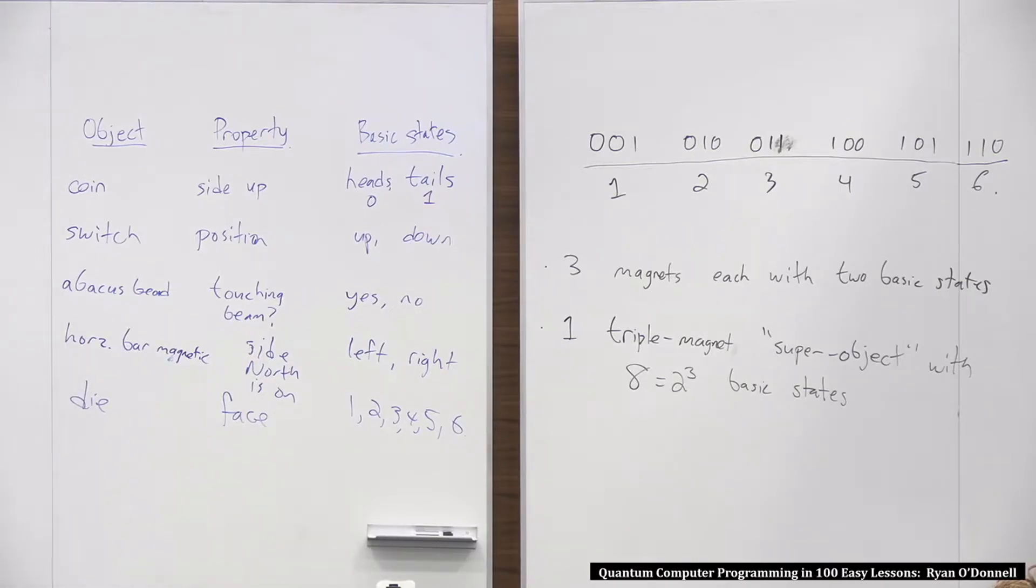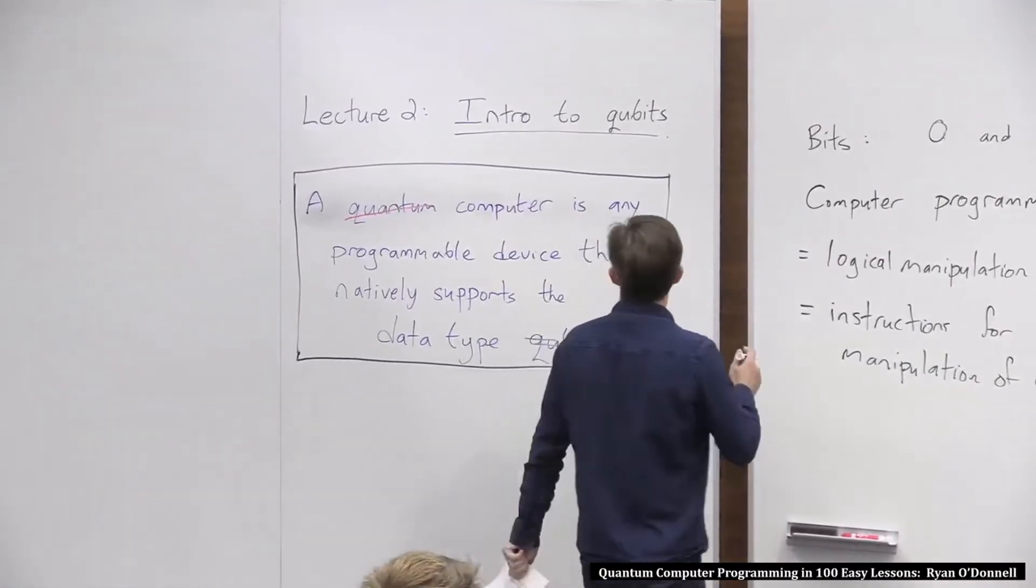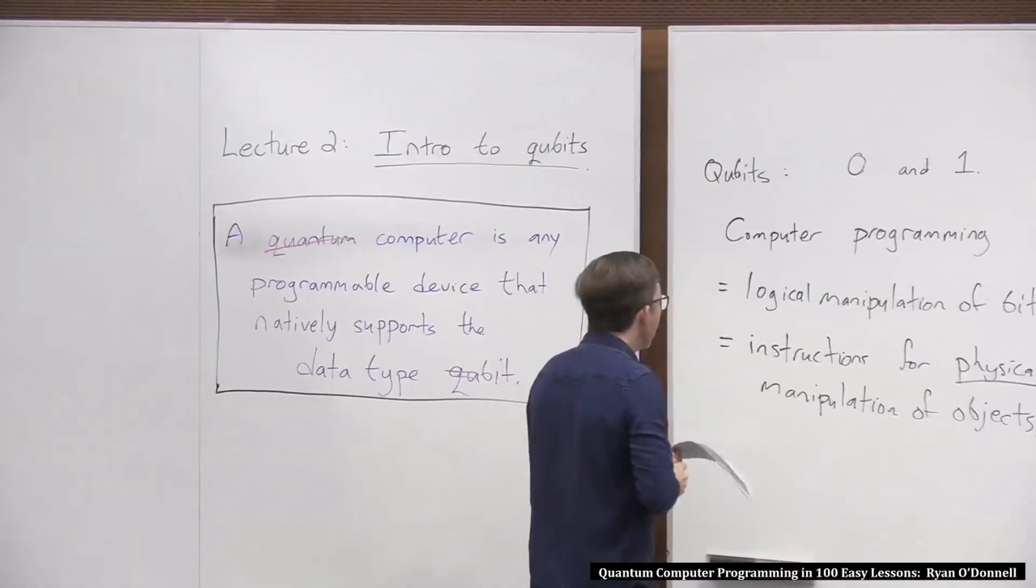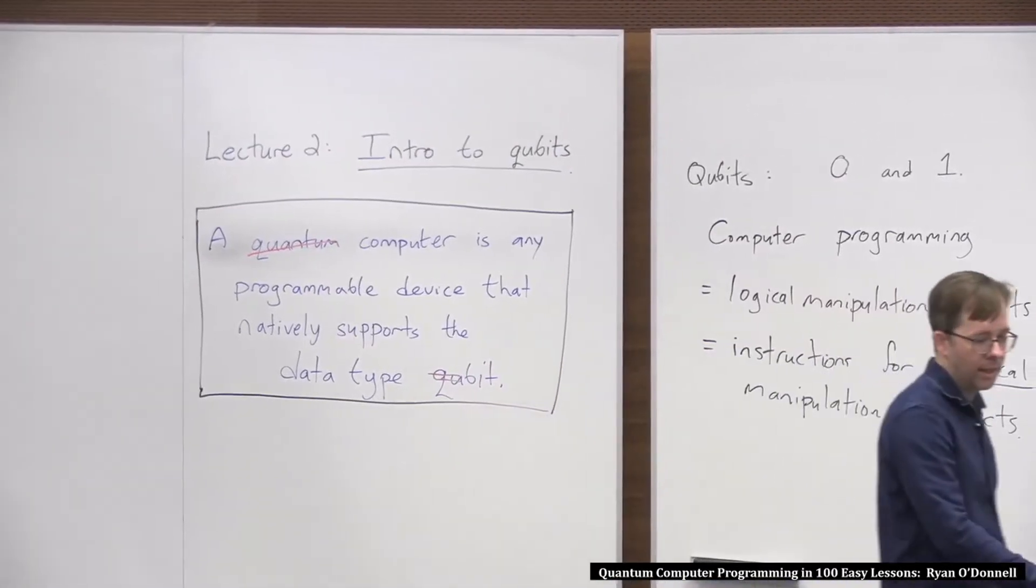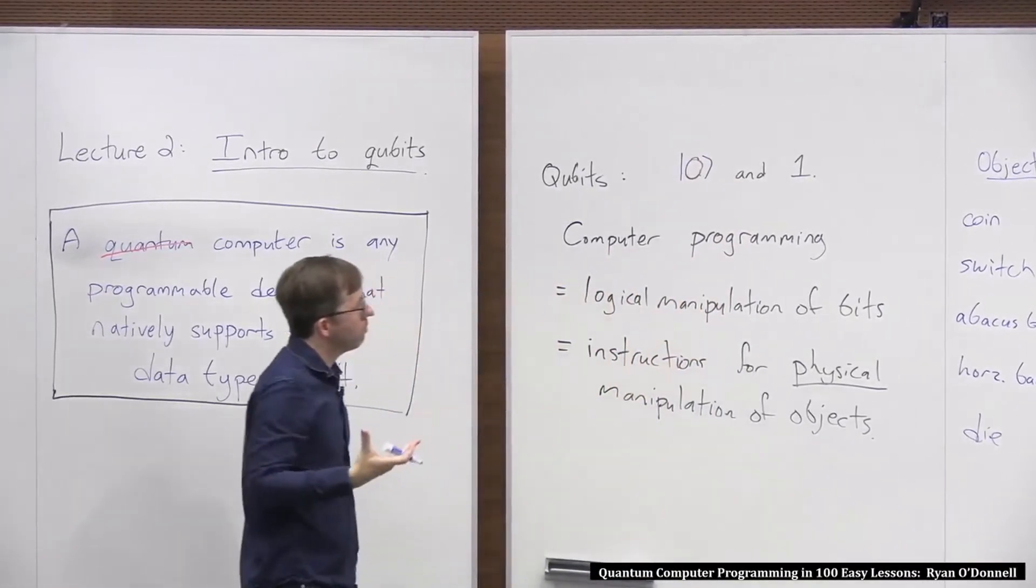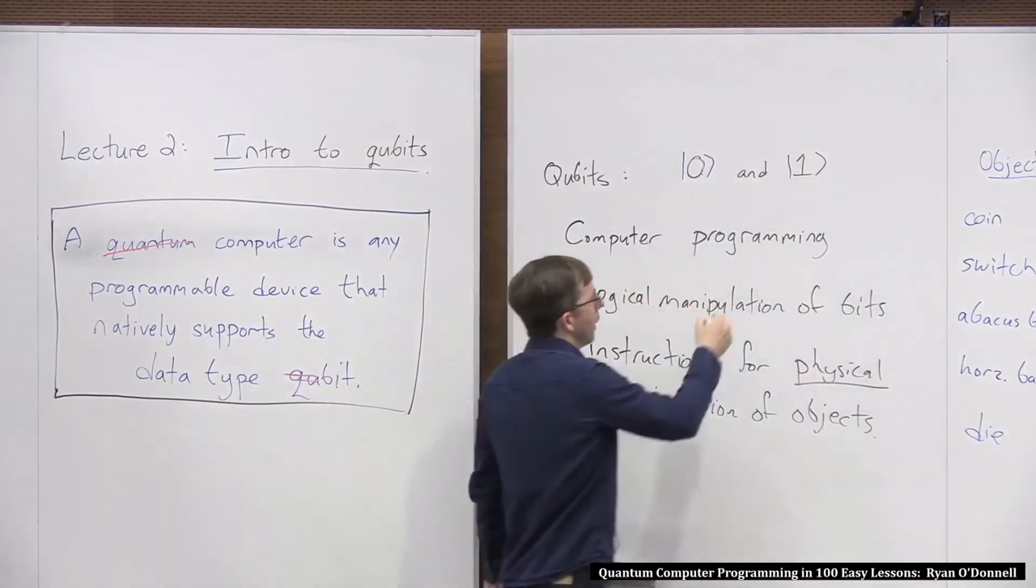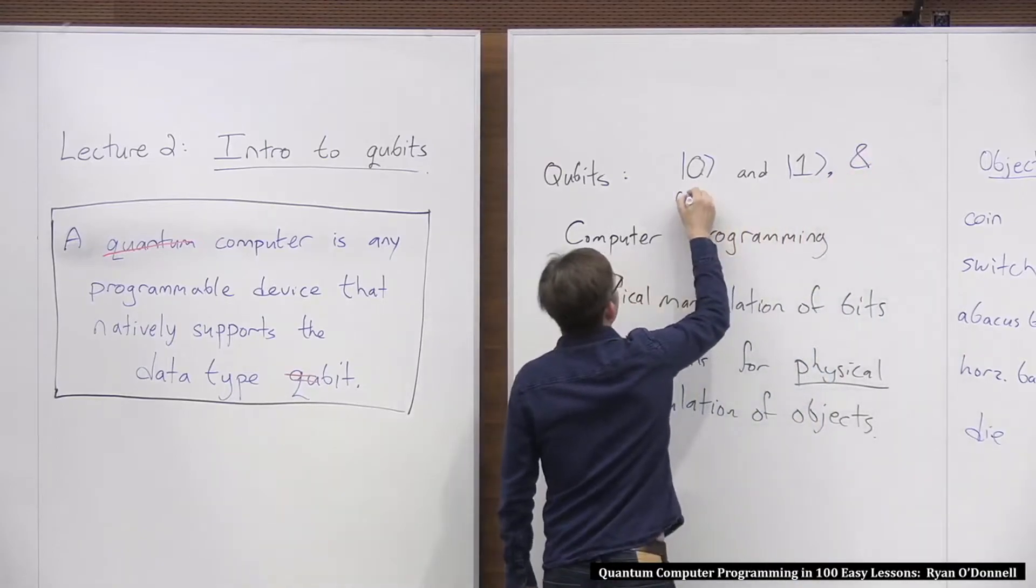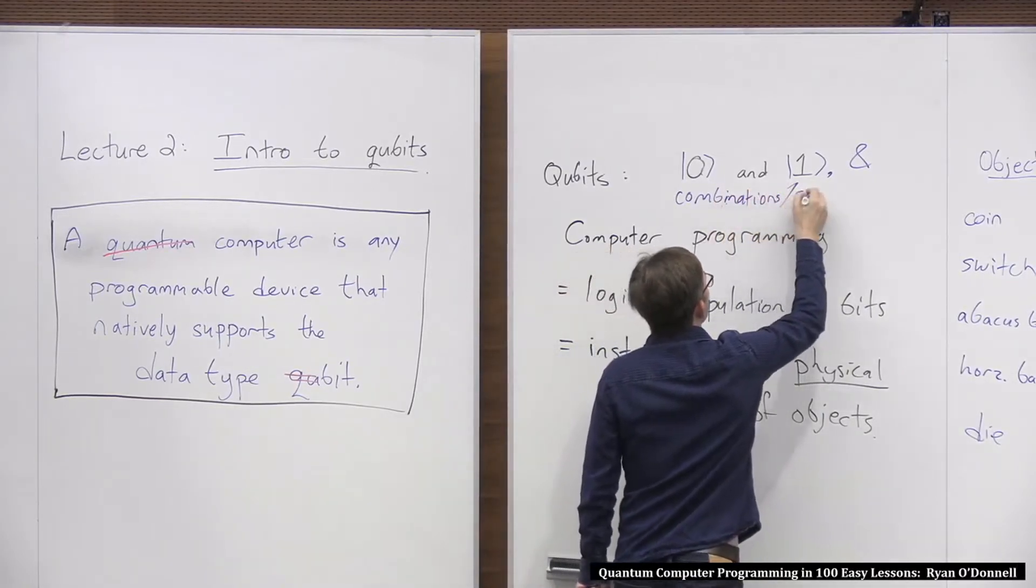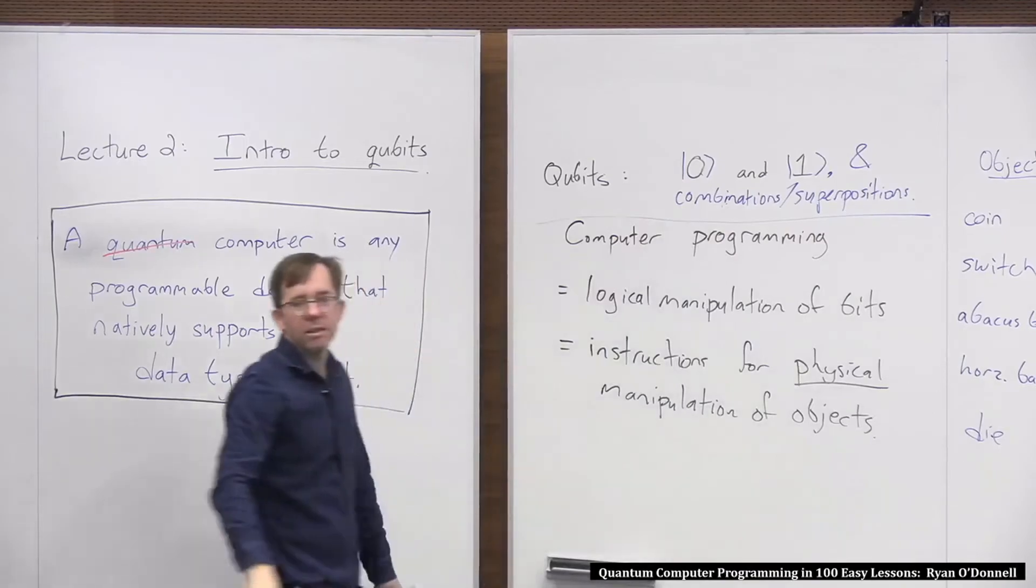And while I'm on this subject, I mean, I want to make a little bit of a subtle point here. Let's say you do this, and you're like, oh, I'm going to store a number between one and six in my old-fashioned hard drive, so I've allocated three little magnets to store the bits. You can think of this as three magnets, each with two basic states. Or you can, in your mind, say, I'm going to consider this triple magnet to just be its own super object. So I'll just, in my mind think, oh, I have one triple magnet, or whenever I have three magnets next to each other, I just call that one object. And it has eight basic states. You know, and this eight is, of course, two to the three basic states.